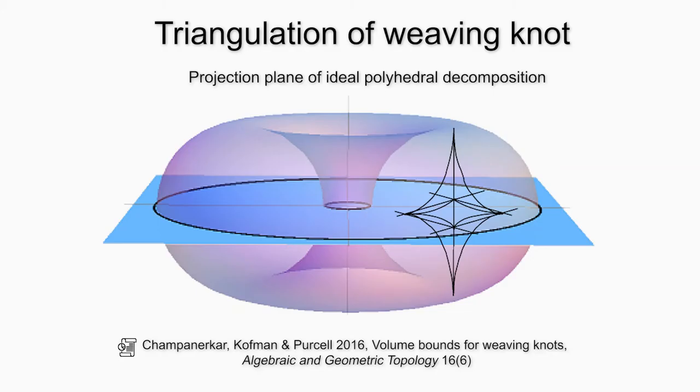We know that the earth is a two-dimensional manifold — the surface of the earth actually folds up into a sphere. The universe is some sort of a three-manifold, but we don't actually know which one it is. Is it a sphere? Is it some sort of a strange donut-shaped thing? There's evidence in various directions, but it's currently unknown what our universe is.